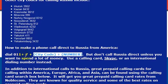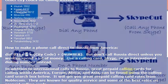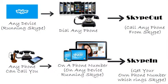So again, 011, then 7, which is the country code for Russia. But I wouldn't really recommend calling direct — your phone company will charge you a lot of money. If you want to call a phone number, I really recommend using Skype. We detail how to make free and low-cost calls using Skype in other videos.